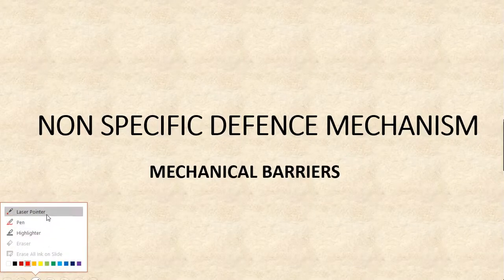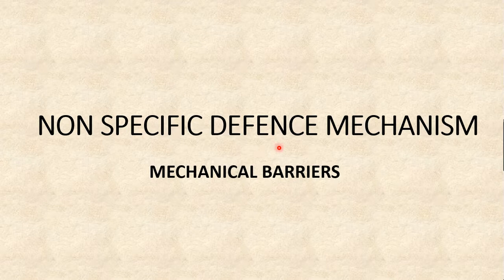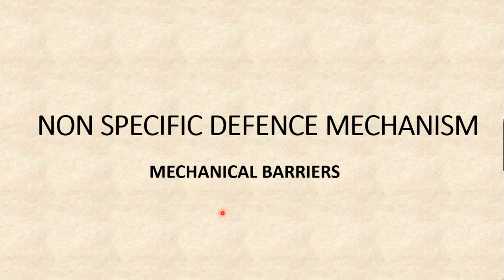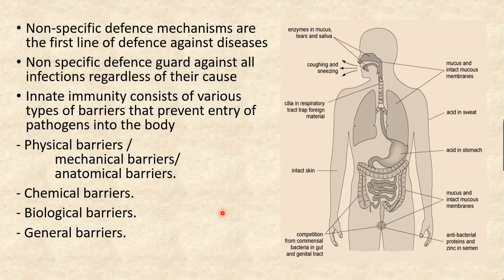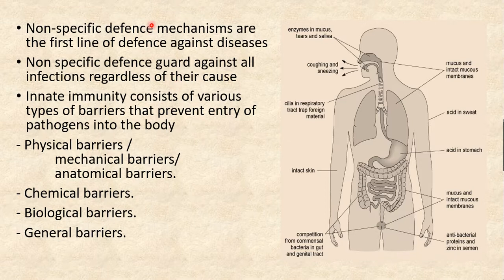We are going to discuss about non-specific defense mechanisms, mainly focusing on mechanical barriers. The non-specific defense mechanism, also called non-specific defenses or the first line of defense against diseases, is not directed against a particular pathogen. This means they guard us against all infections regardless of their cause, and they are the main mechanism involved in innate immunity.